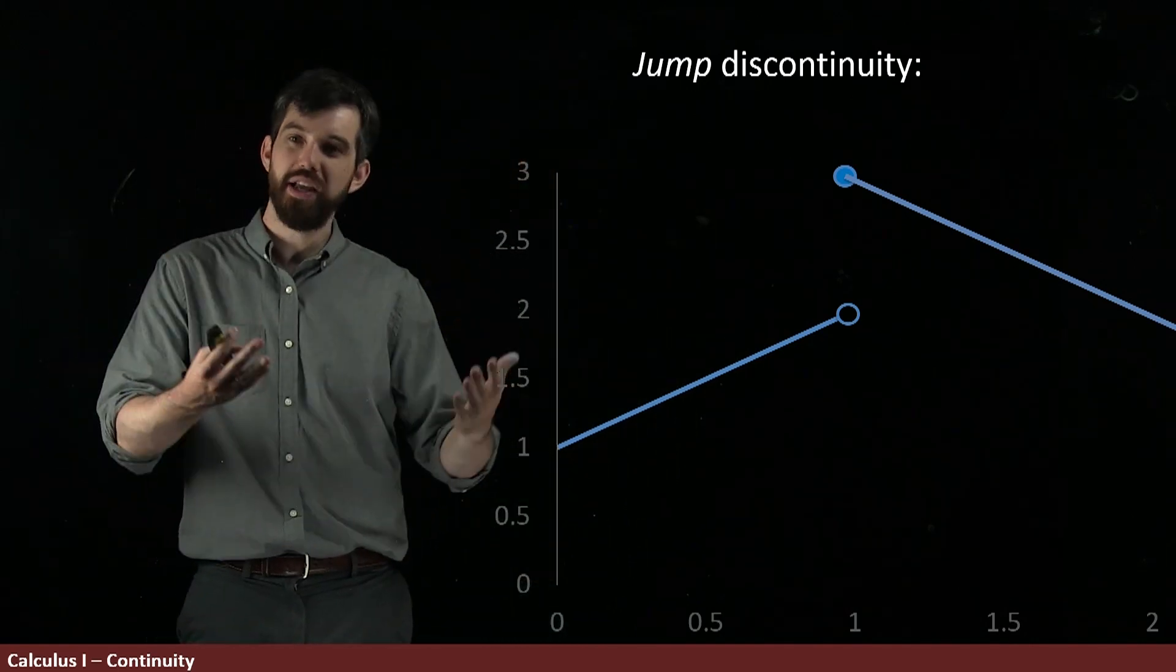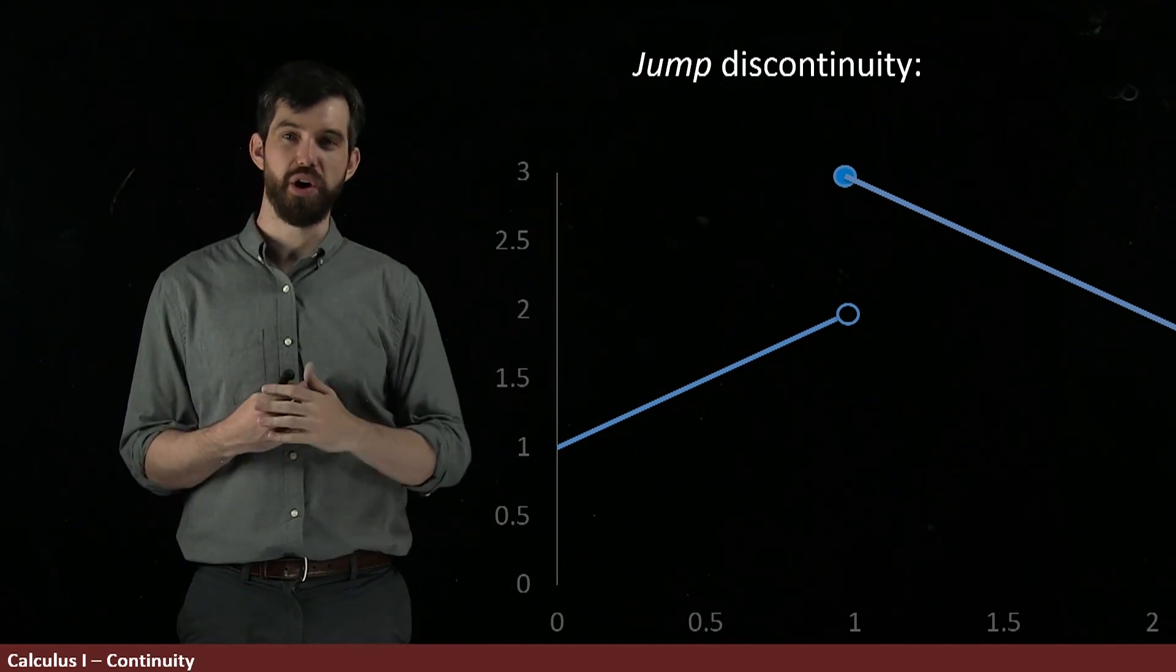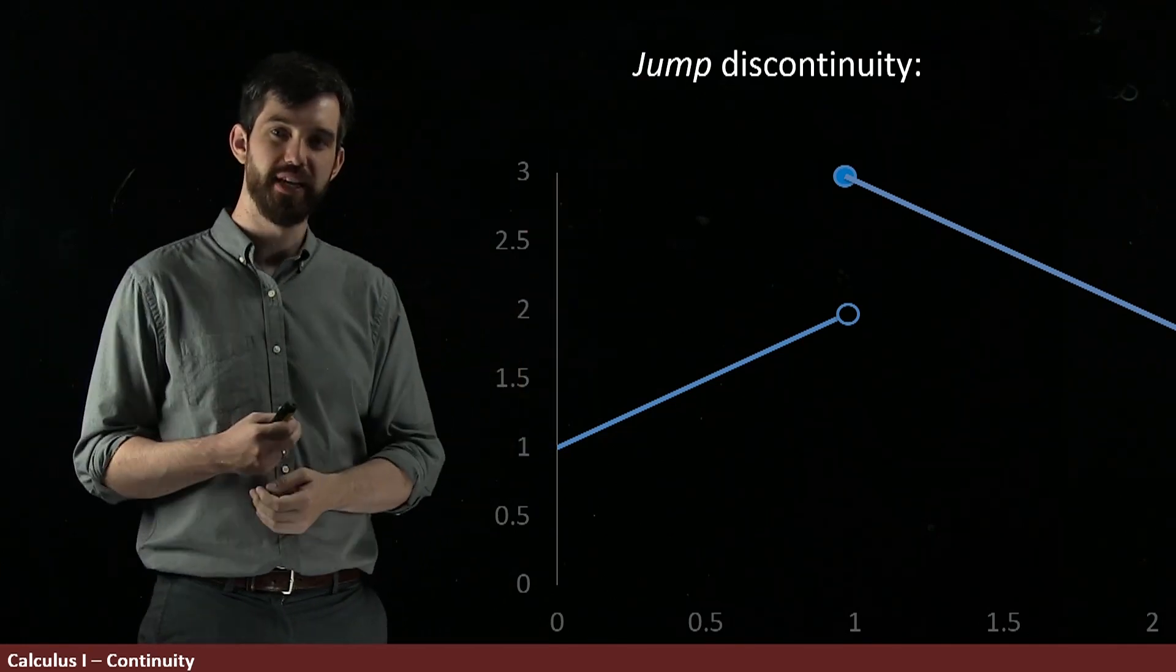So we have these removable, these infinite, these oscillatory, and these jump discontinuities as different types of discontinuities that can be.